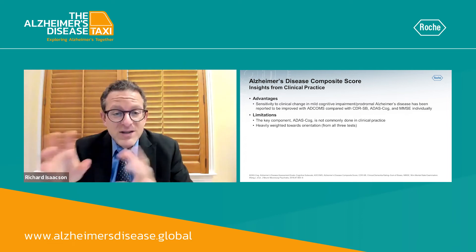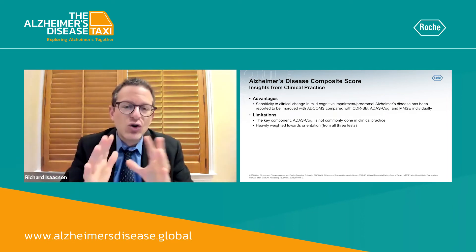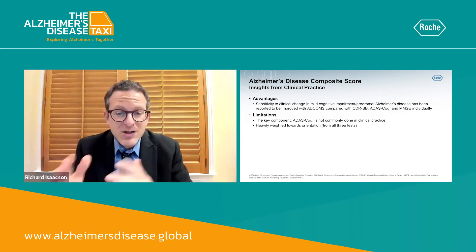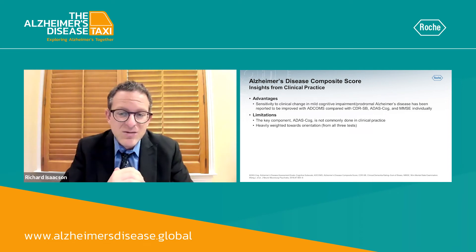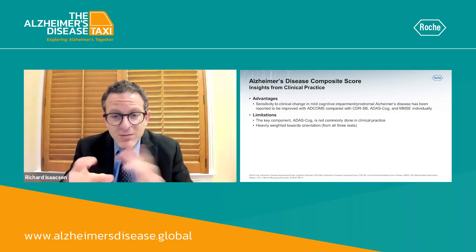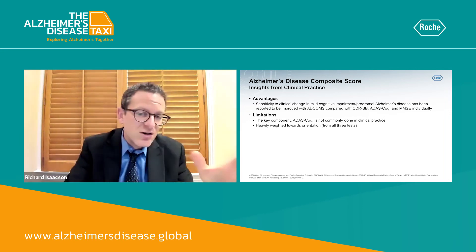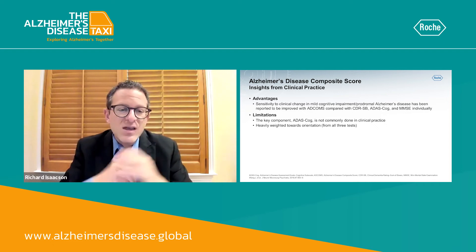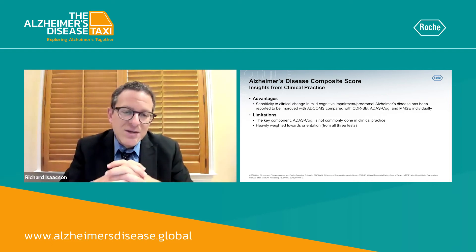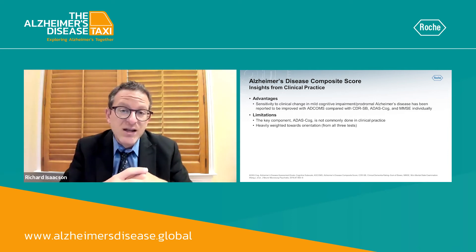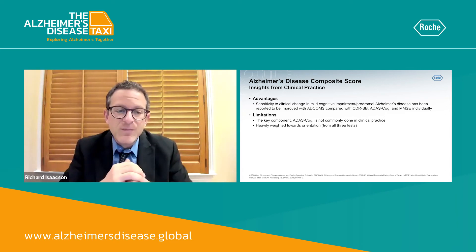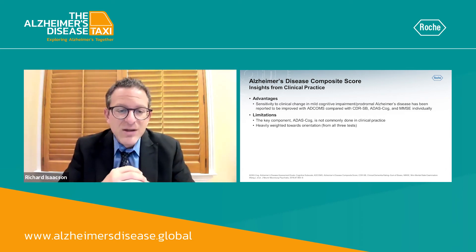It's not only sensitive to clinical change, but it's more sensitive in the earliest phases — for example, mild cognitive impairment, the pre-dementia phase of Alzheimer's, prodromal Alzheimer's disease, and dementia. It's been reported to be improved with ADCOMS compared to each of the individual tests, whether you use CDR sum of boxes by itself, ADAS-cog, or MMSE individually. This greatest hits approach is something that from a statistical and clinical trial perspective is more helpful, more valid, and more meaningful.